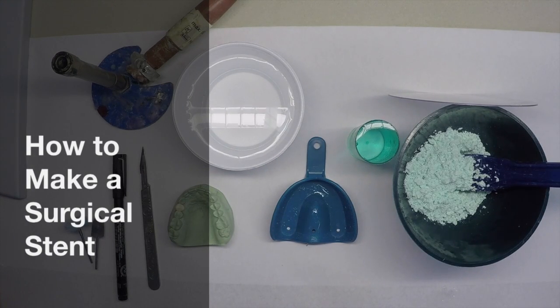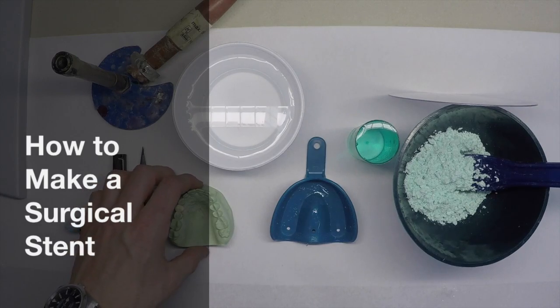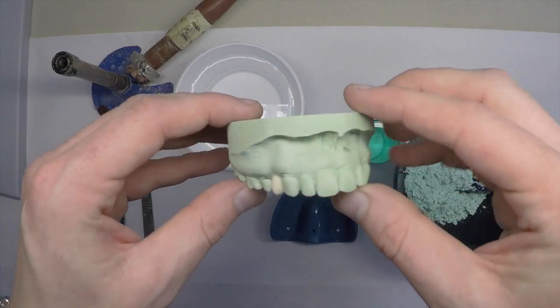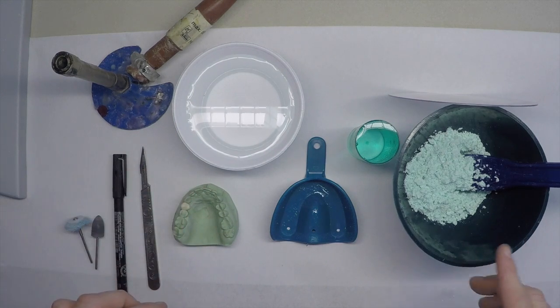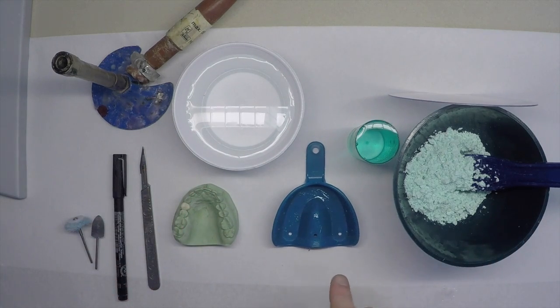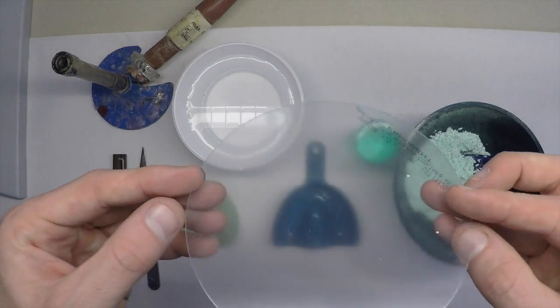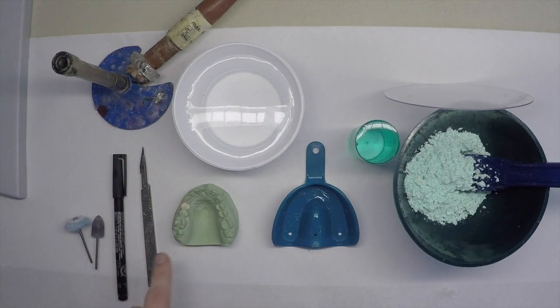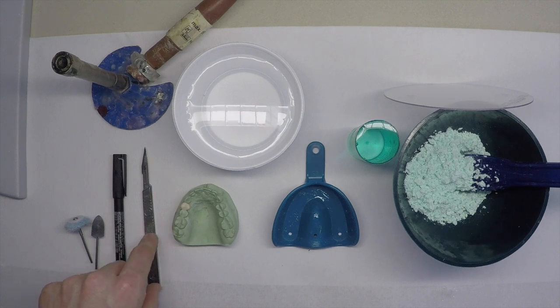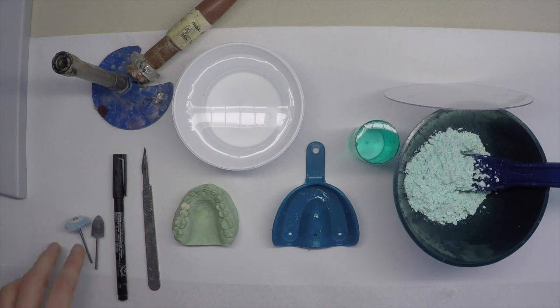What we need to make a surgical stent is our diagnostic wax up, some alginate, a tray with some adhesive, a 1mm Essex retainer blank, some slurry water, a metal handle number 11 scalpel, a pen, some polishing burrs and a flame.